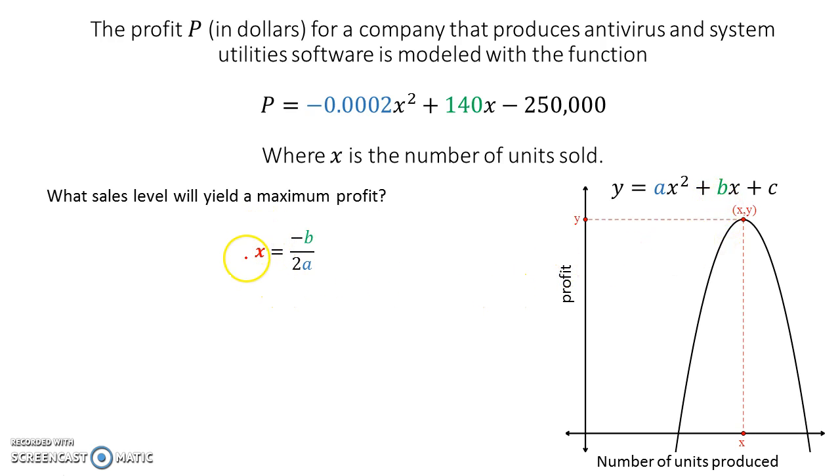To get the x-coordinate for the vertex of any parabola, whether it's facing down like this one or facing up, it doesn't matter, is negative b over 2a. So the opposite sign of this number divided by twice this number. That's all we're going to do.